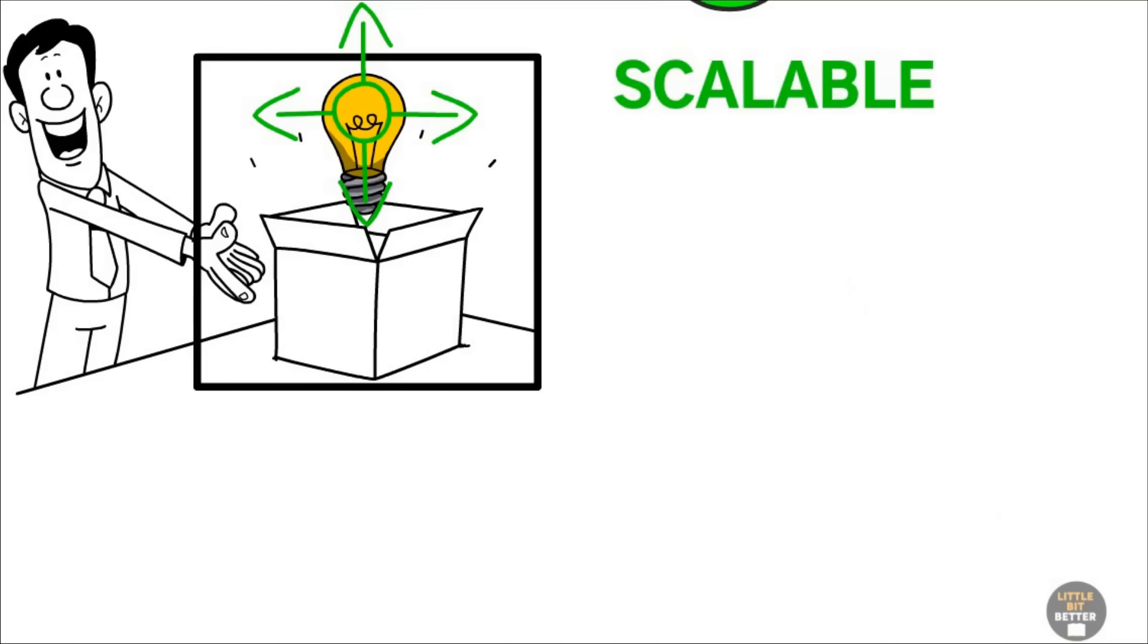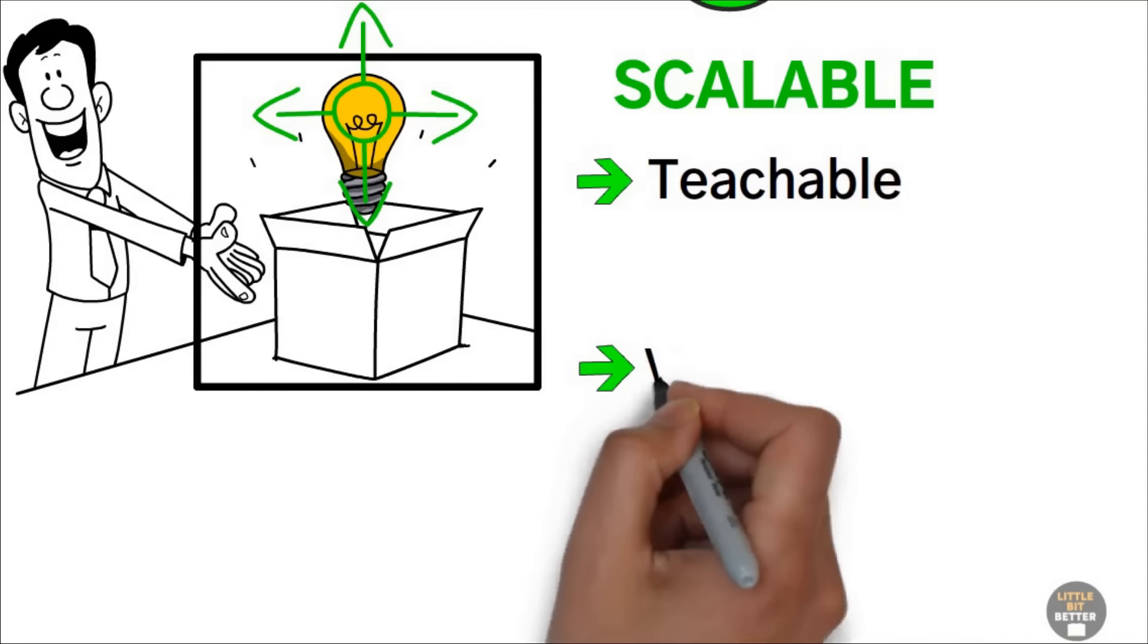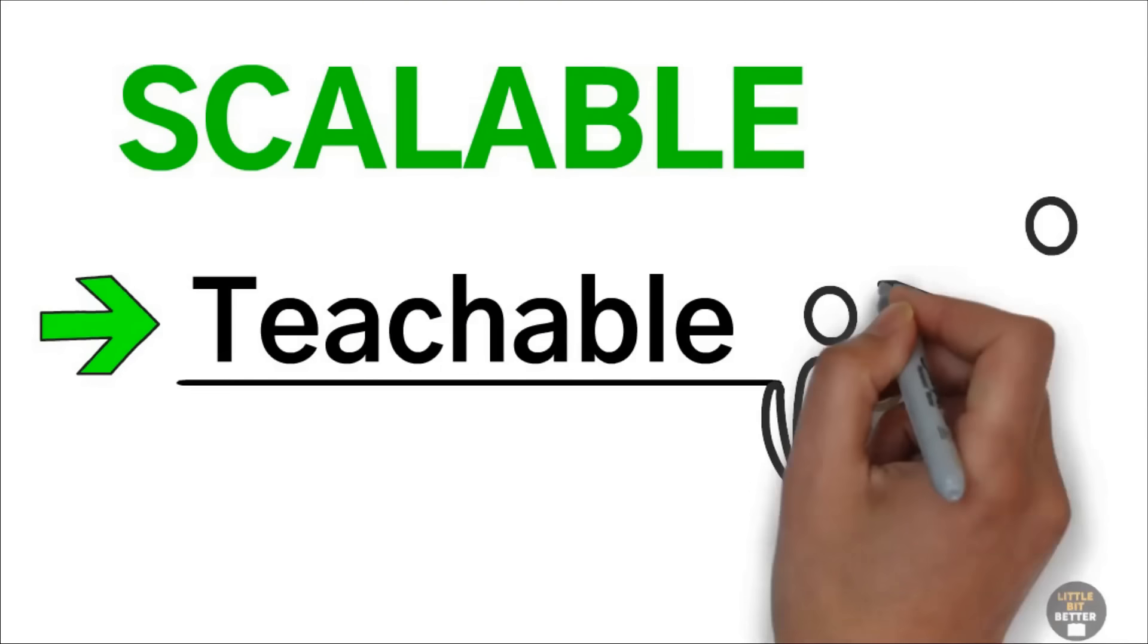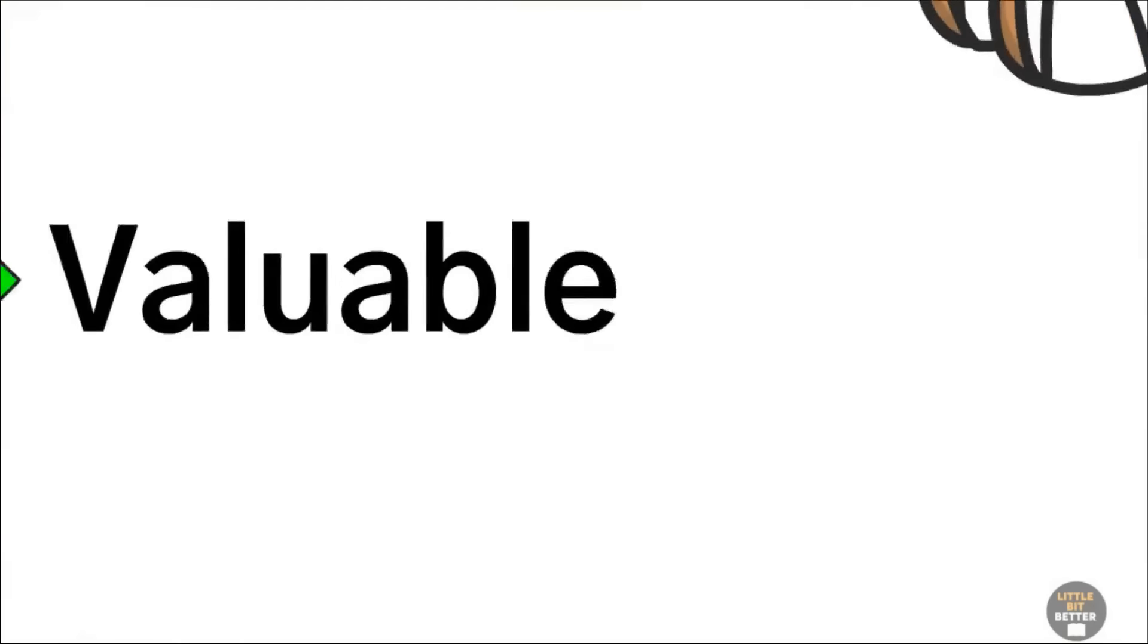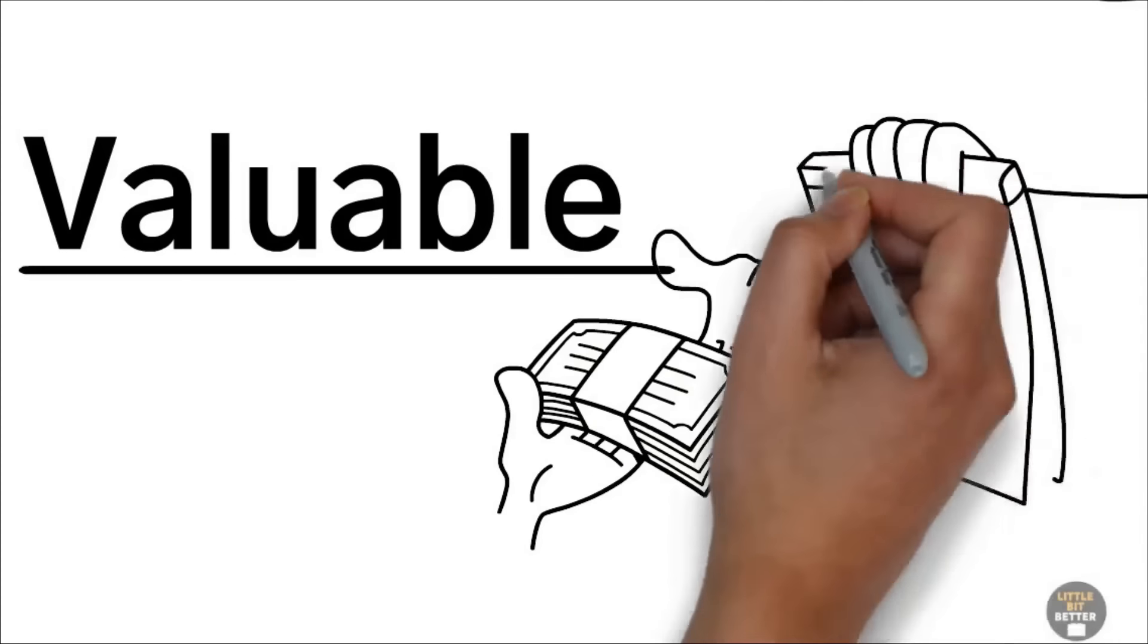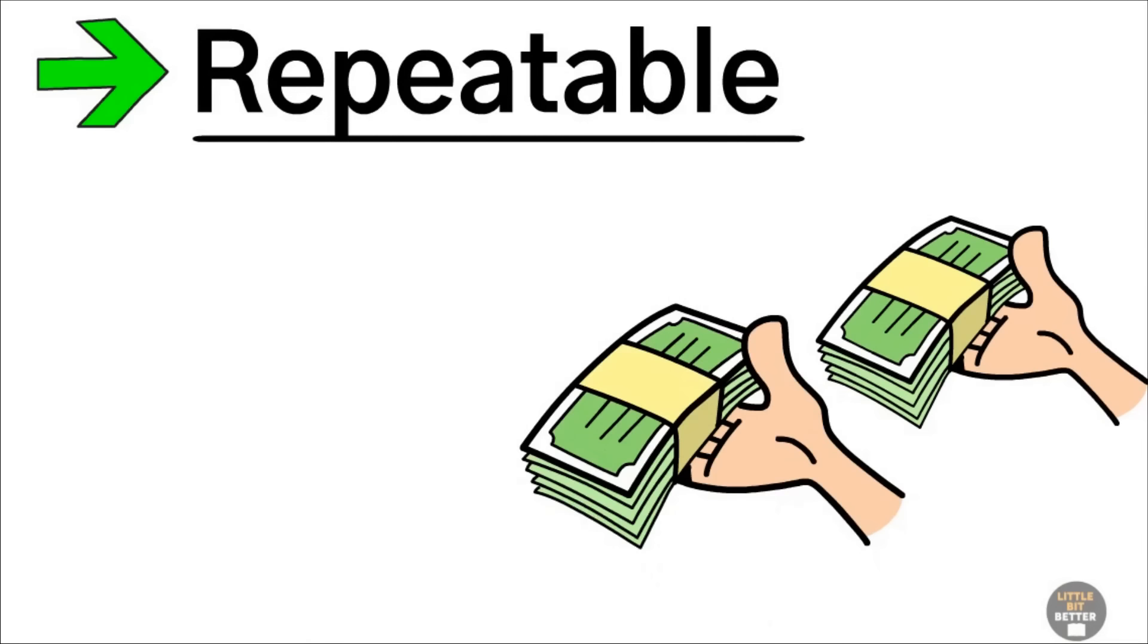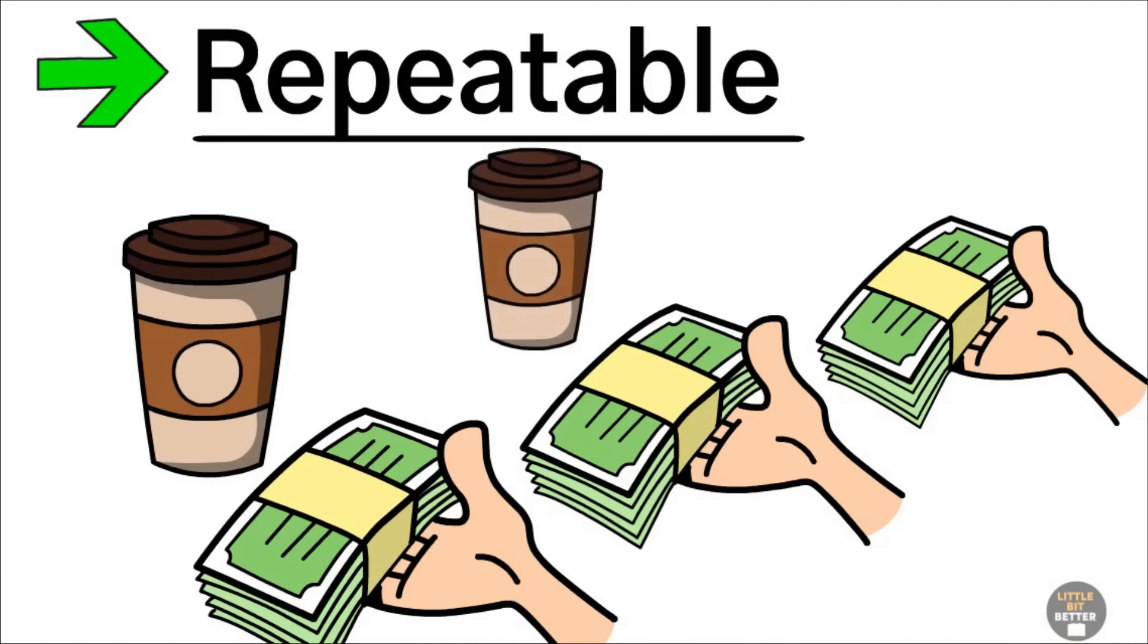Scalable products meet three key criteria. They are teachable, valuable, and repeatable. Teachable means you can train others to build and sell them. Valuable products are something your customers will pay for because they solve an important problem for them. Repeatable means customers come back for it again and again, just like their favorite brand of coffee.